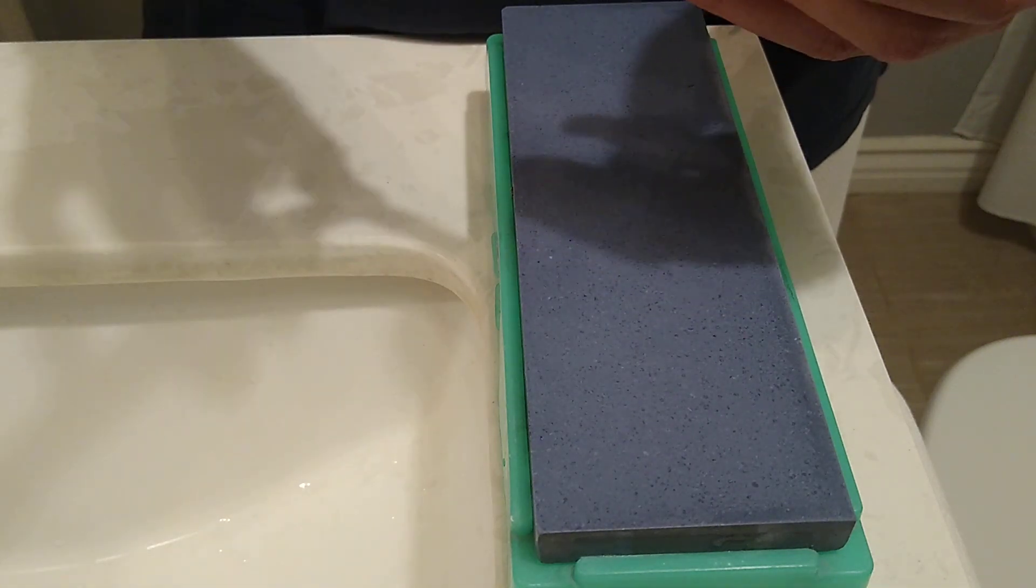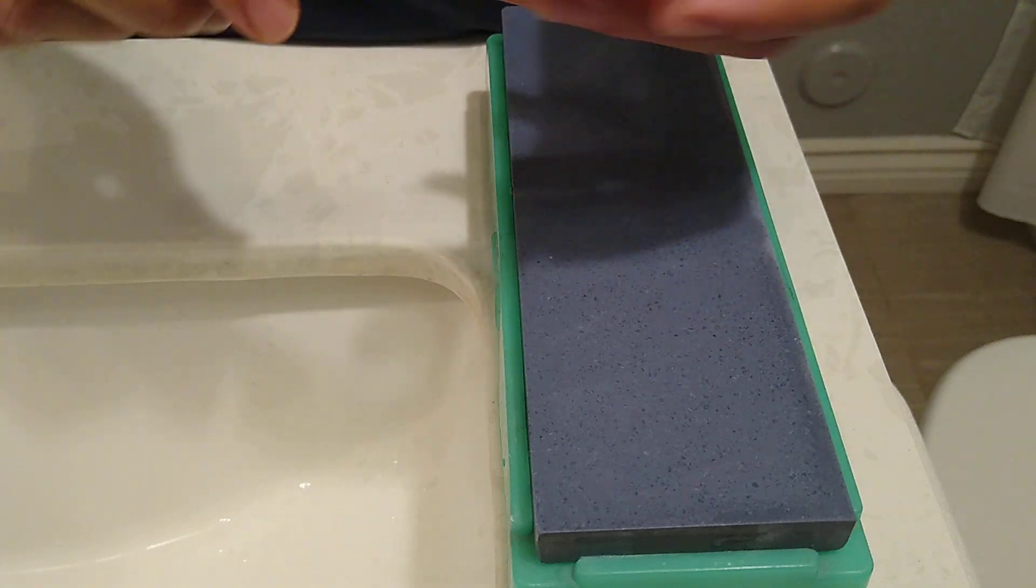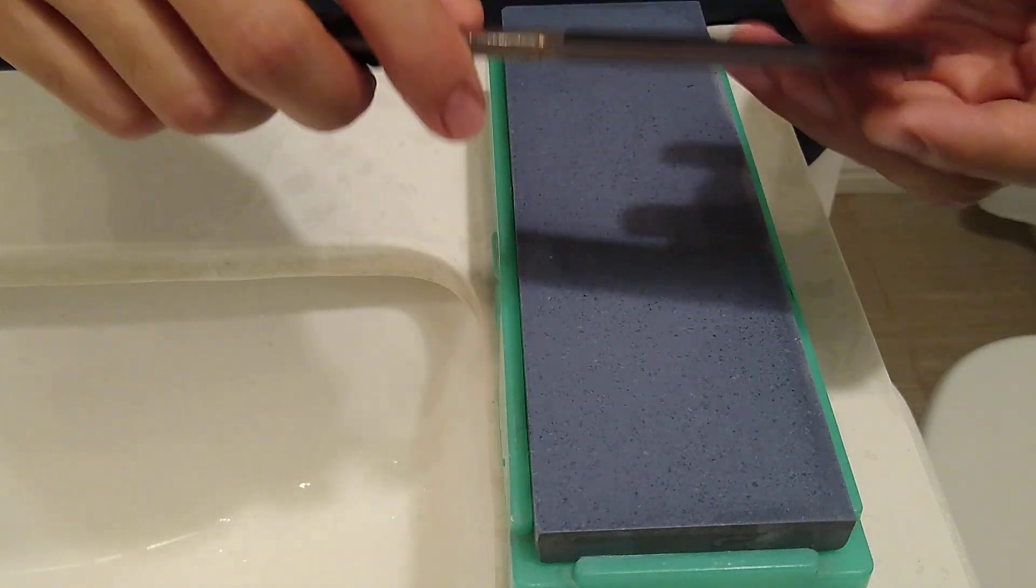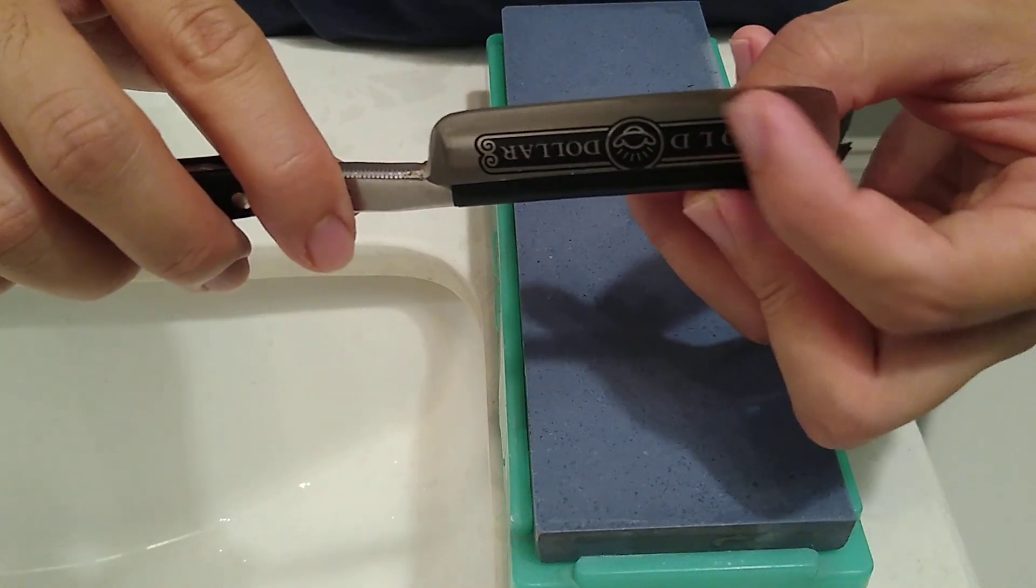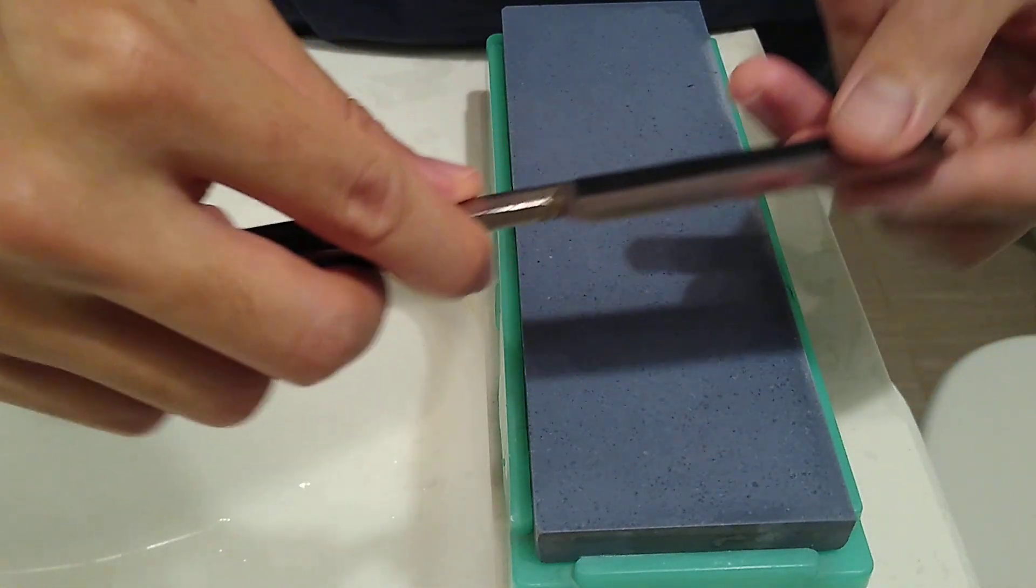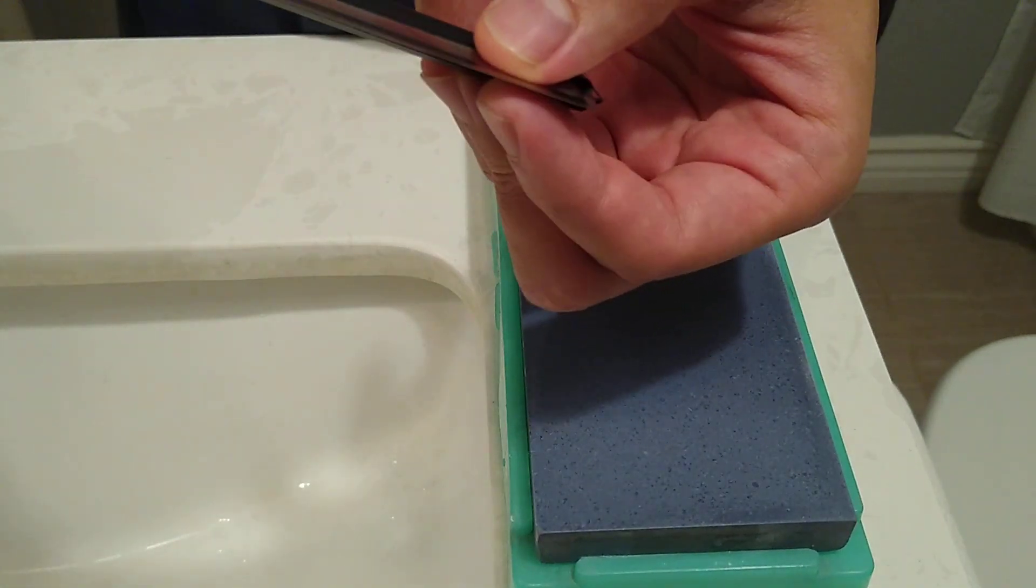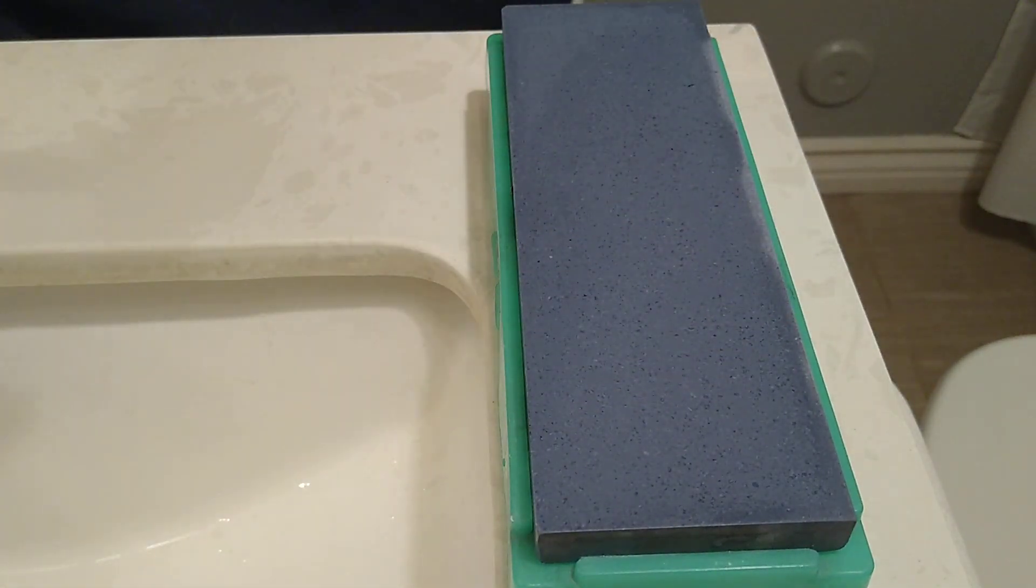I've had to use a lot of rolling X strokes. I didn't want to use it, but basically this top 25% of the blade wasn't even touching the stone at all. So I had to roll it so that the edge would touch.